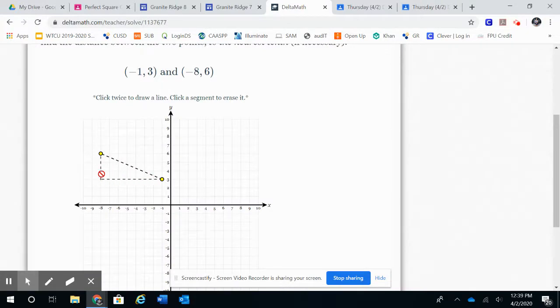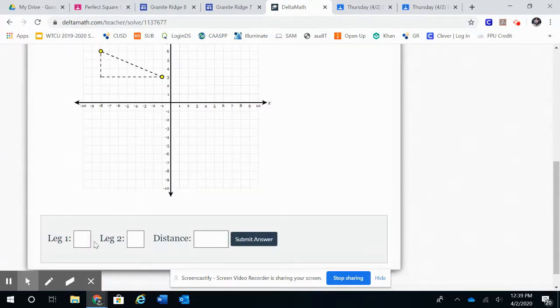Here is my right triangle. My 90 degree angle is right here. I'm going to scroll down. Leg one is going to be one of the sides of my triangle, so if I count the length of that, I have three.